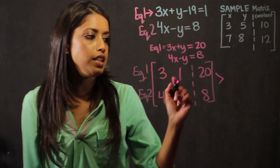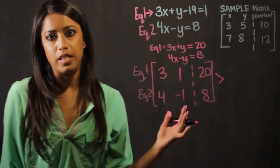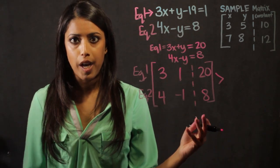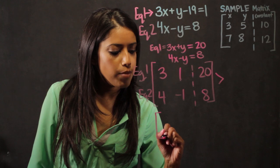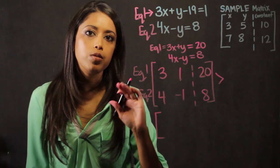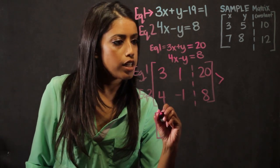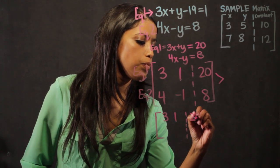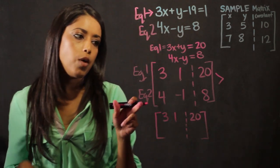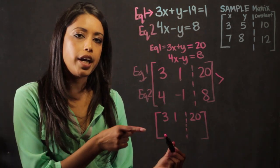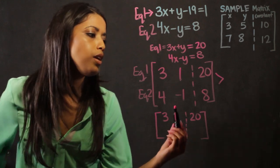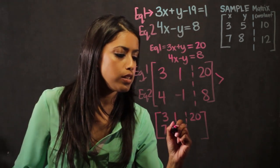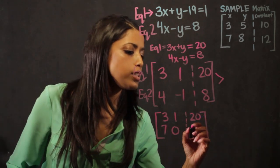So I can right away see that if I add 3 to 4, it's going to be 7. So that's not going to give me a 0 very quickly. If I add 1 to minus 1, I get 0 right away. So I create another matrix box, and I'm going to leave the top row the same. I'm not going to change it. It's going to be 3, 1, and the constant is going to stay the same. But now with my second row, I'm going to actually add the two numbers, and create a new second equation. So 4 plus 3 will give me 7. Minus 1 plus 1 will give me 0. 8 plus 20 is going to give me 28.